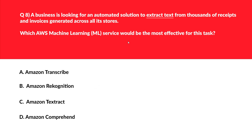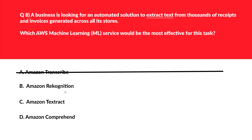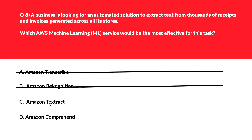This question is about extracting text — we've done hands-on for this kind of thing. Option A is Amazon Transcribe — Transcribe is used for converting speech to text and not for extracting text from documents as required, so we'll reject this. Option B is Amazon Rekognition — Rekognition is used for image and video analysis, not for extracting text from documents, so wrong answer. Option C is Amazon Textract — Textract is specifically designed to extract text and data from scanned documents such as receipts and invoices. Let's park this.